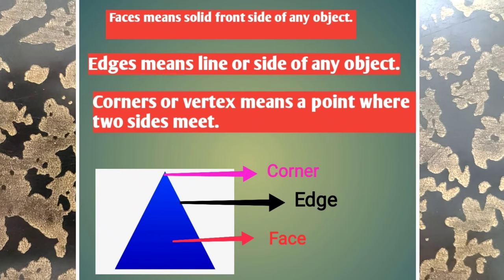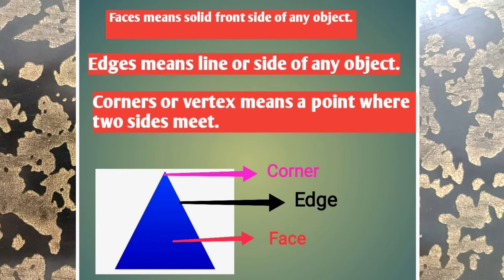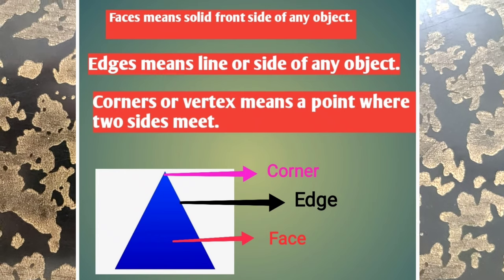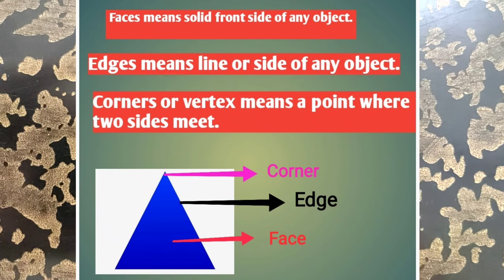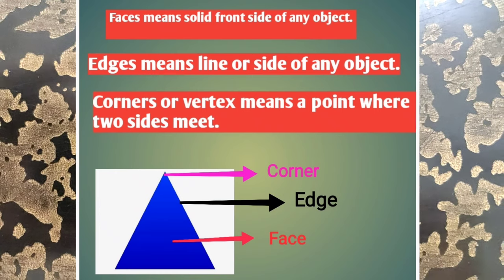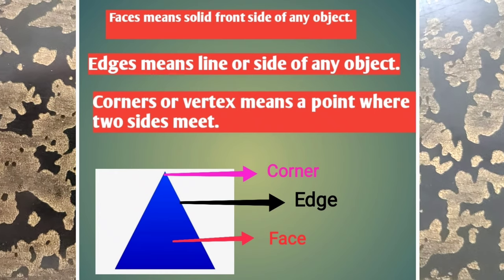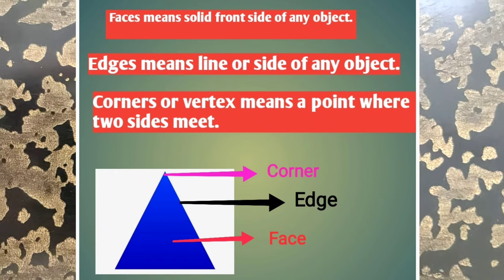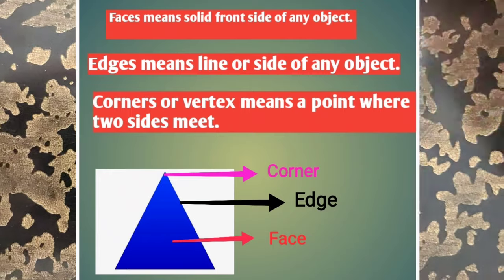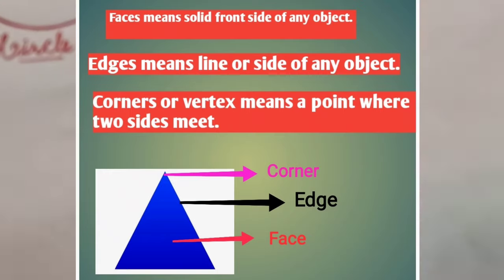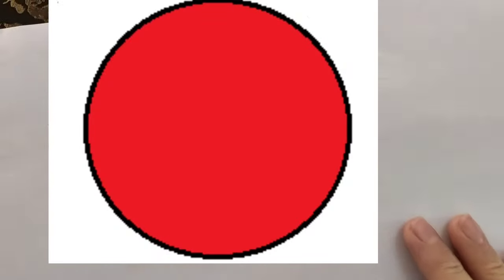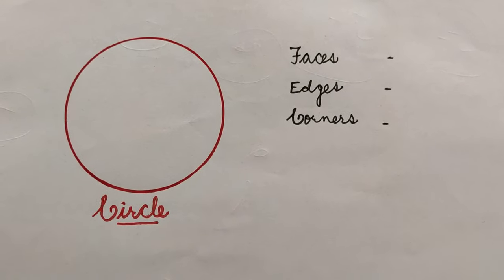Okay, so those were the new terms — face, edge, and corner. Now let's come to the shapes. The first shape we have is a circle.